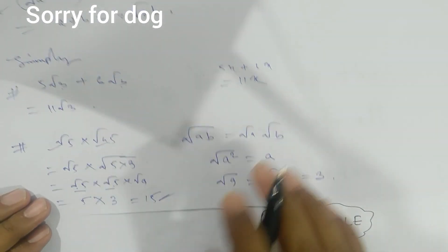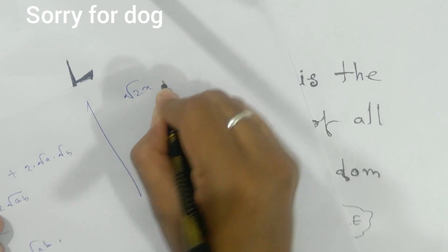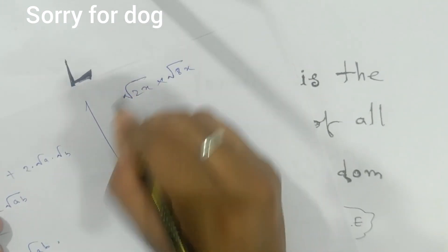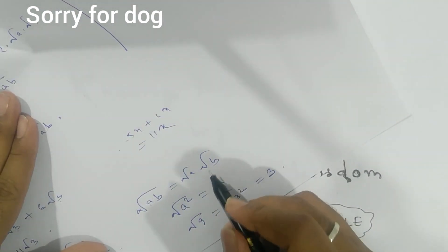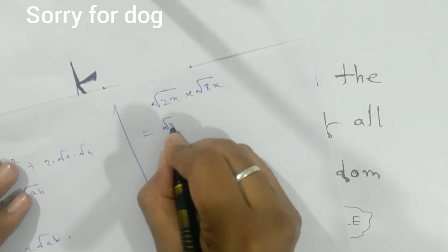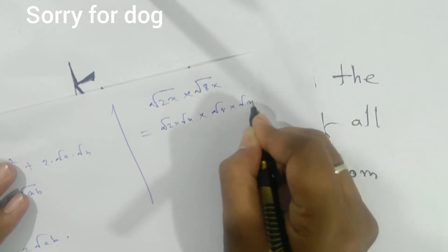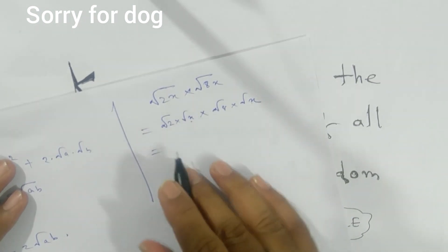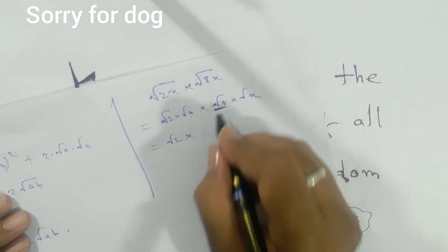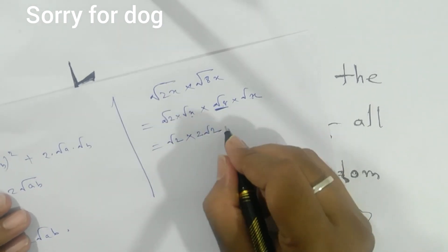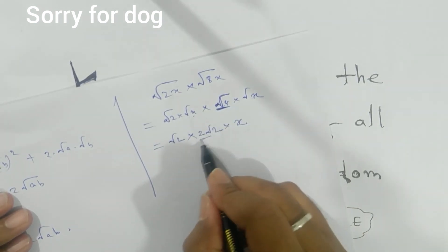Another question: simplify √(2x) × √(8x). Using the rule √(ab) = √a × √b, break it as √2 × √x × √8 × √x. Then √x × √x = x. Now √8 = 2√2, so we have √2 × 2√2 = 2 × 2 = 4. The final answer is 4x.